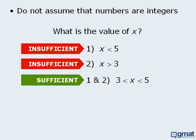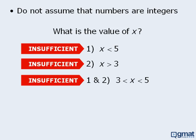However, there is no reason to assume that x is an integer, since there is no mention of this in the question. So x can be any number greater than 3 and less than 5. Since we cannot definitively determine the value of x, the combined statements are not sufficient, which means the correct answer is E.